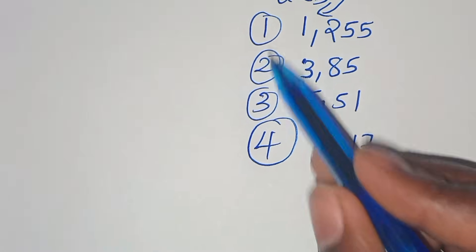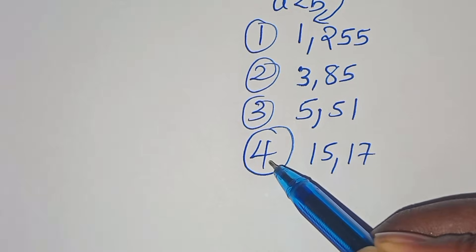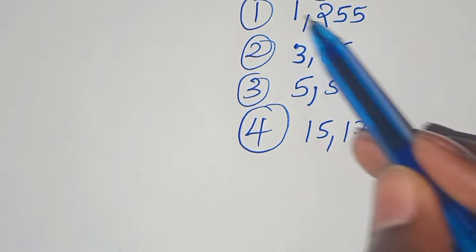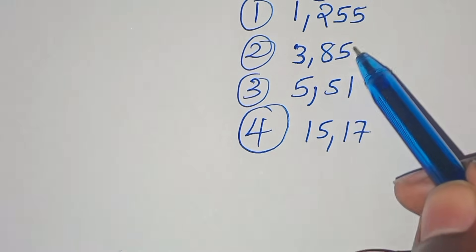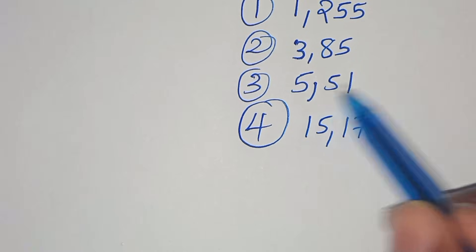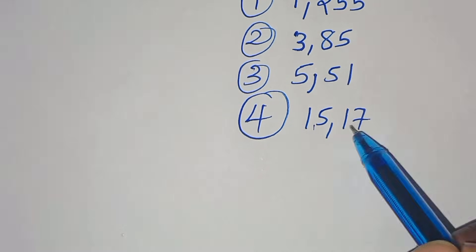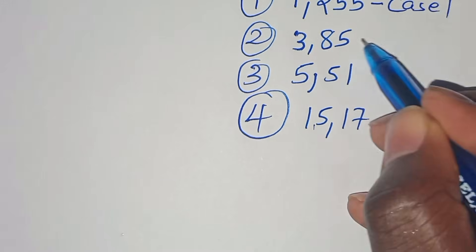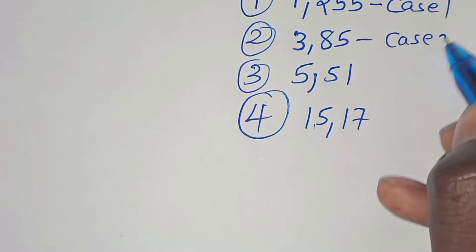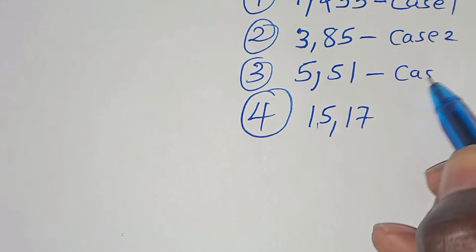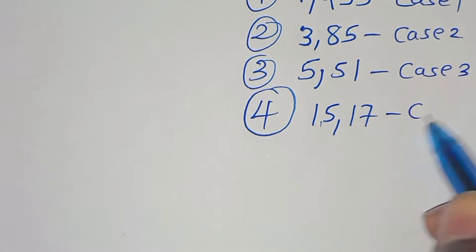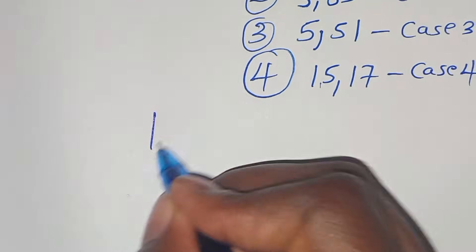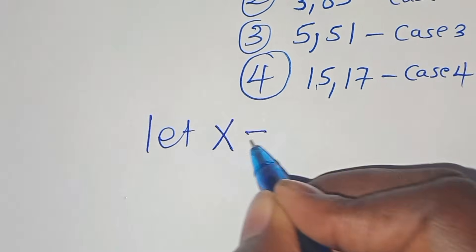This gives us 4 cases. Since a is less than b, we have: Case 1: 1 less than 255; Case 2: 3 less than 85; Case 3: 5 less than 51; Case 4: 15 less than 17.